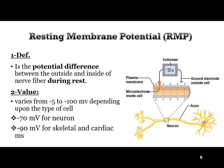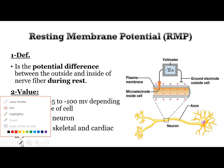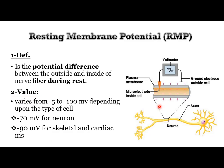First, we should know the meaning of resting membrane potential. It is the potential difference between the outside and inside of the nerve fiber during rest. We have an electric difference between outside and inside of the membrane. It measures about negative 70 millivolts for neurons and negative 90 for skeletal and cardiac muscle.